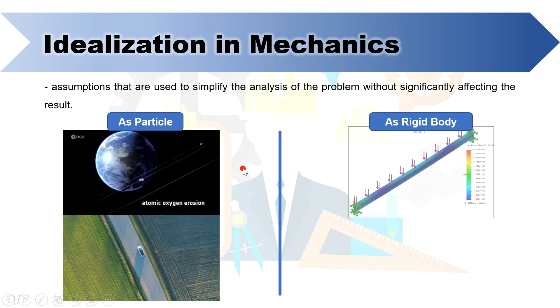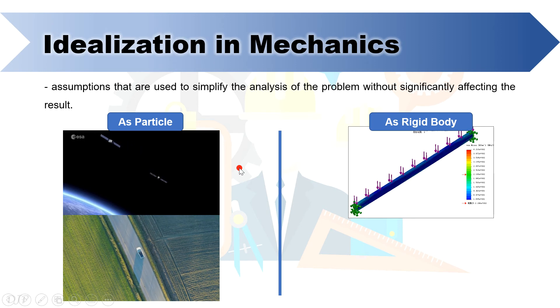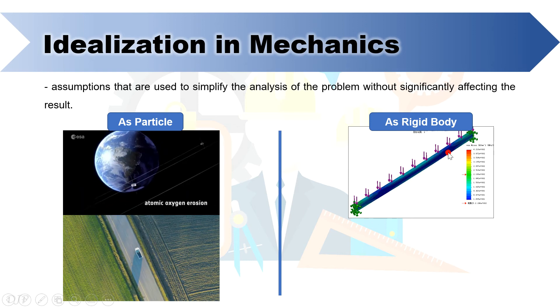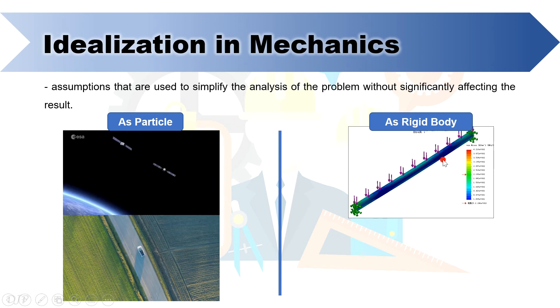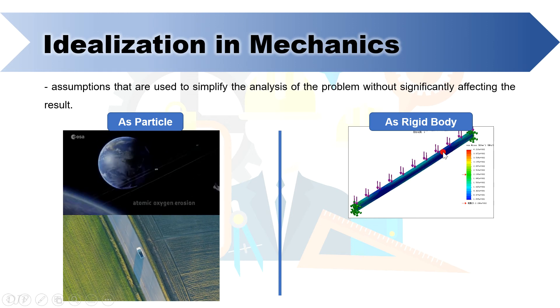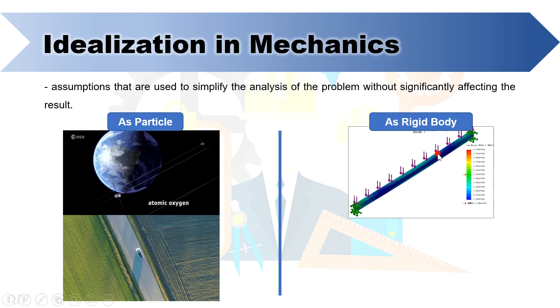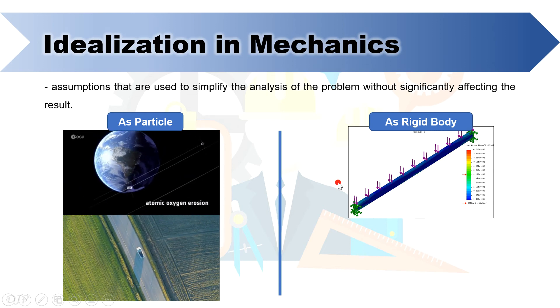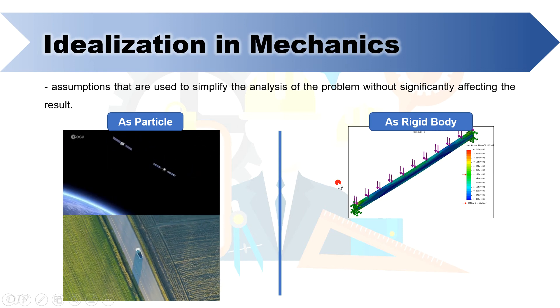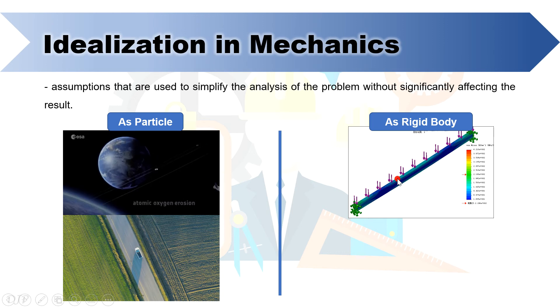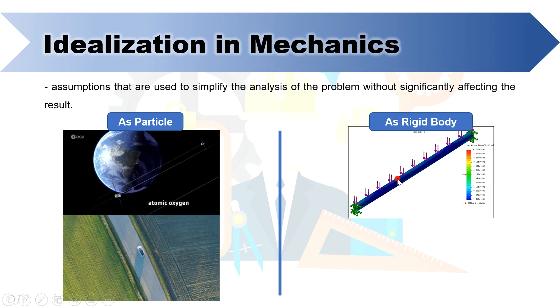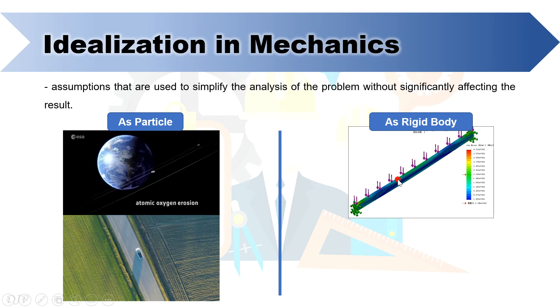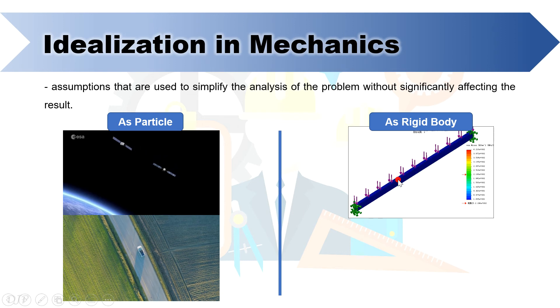Now for rigid body, let's consider this structural beam of a building. As you can notice, downward forces are spread all throughout its length, which means that the dimension of this body should be taken into account to investigate its motion. Also, you can notice that the beam experiences a slight deflection due to load. However, even with this slight deflection, the beam can still be analyzed as rigid body because the deformation is too small that it can be neglected.